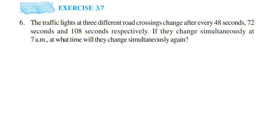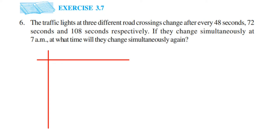So we're going to find the LCM of all three numbers. I'm going to use prime factorization — dividing each number by the smallest prime factors. Write down all three numbers together: 48, 72, and 108. Now try to divide all numbers with the same prime number. I'll start with 2.